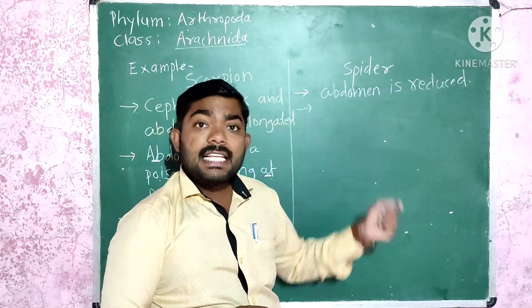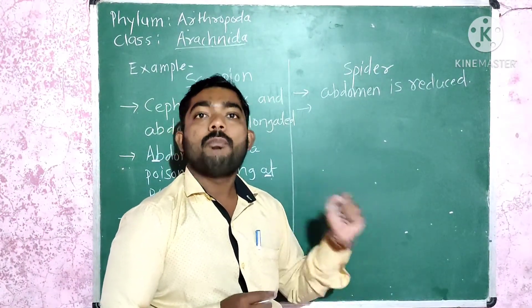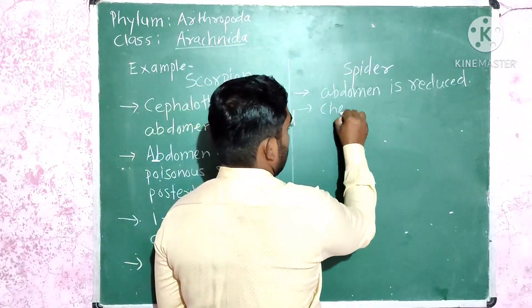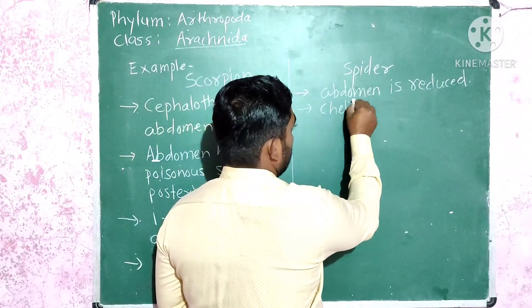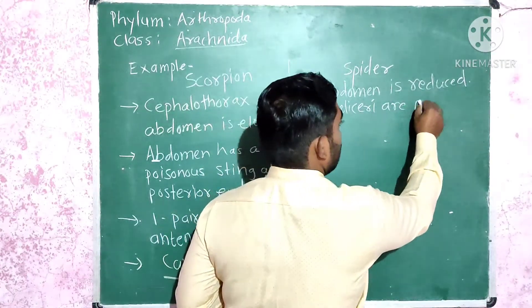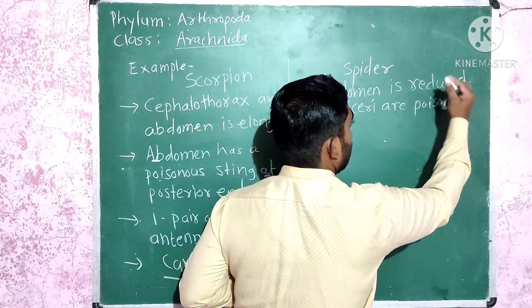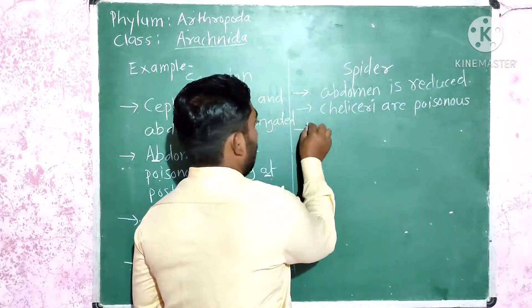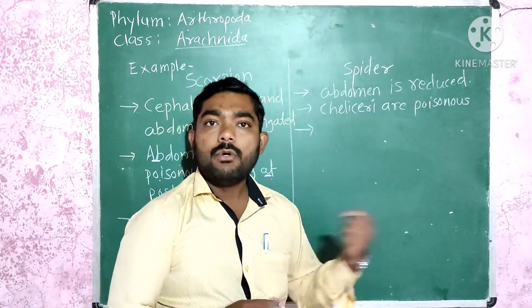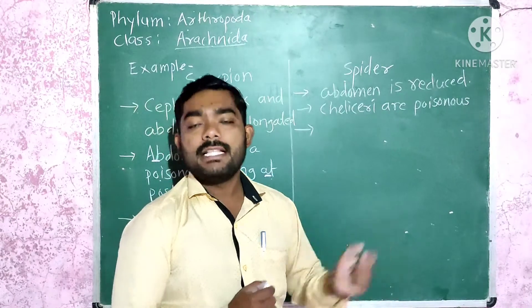Their chelicerae are poisonous in spiders. They help in food capturing and defense or offense mechanism.